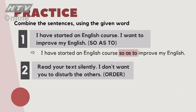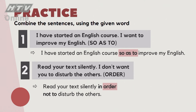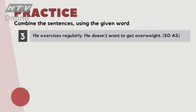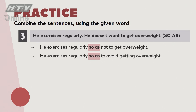Câu số 2: 'Read your text silently. I don't want you to disturb the others.' Đọc bài thầm để không làm phiền những người bên cạnh. Dùng 'in order to': 'Read your text silently in order not to disturb the others.' Câu tiếp theo: 'He exercises regularly. He doesn't want to get overweight.' Dùng 'so as to': 'He exercises regularly so as to avoid getting overweight.'